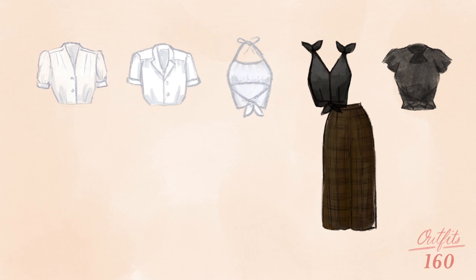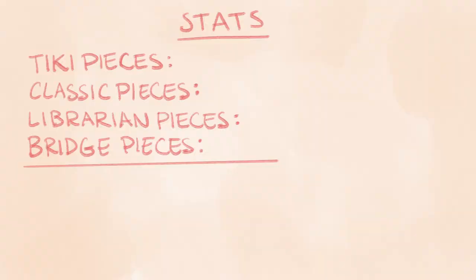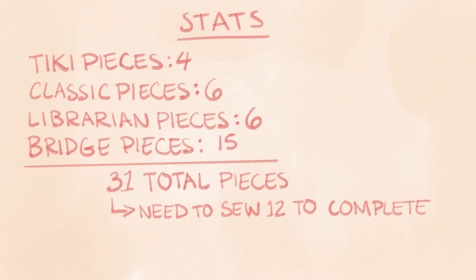Now let's get nerdy with some numbers. After sewing, I'll have four Tiki pieces, six Classic Pin-Up pieces, six Librarian pieces, and 15 bridge pieces for a total of 31 items. I only need to sew 12 to have a possible outfit count of... drumroll please...